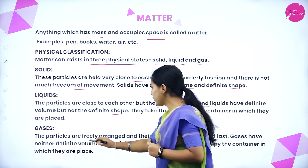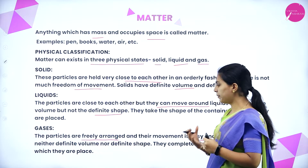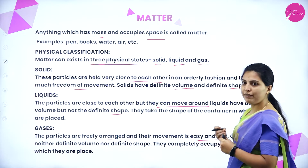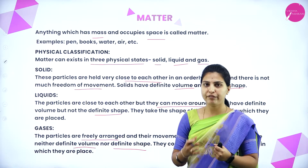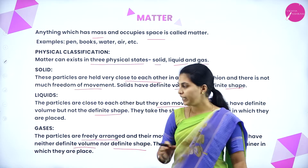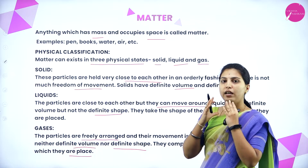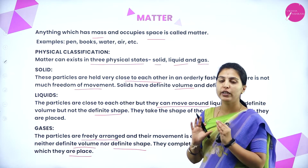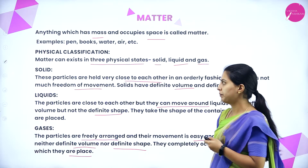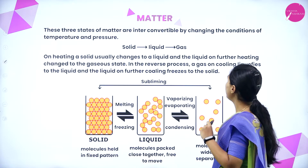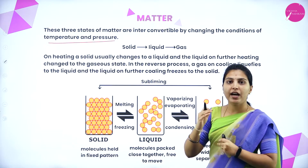In gases, the particles are freely arranged and their movement is easy and fast. Gas molecules are completely apart from each other with complete freedom of movement. Gases have neither definite volume nor definite shape — they completely occupy the container in which they are placed. These three states of matter are interconvertible by changing the conditions of temperature and pressure.